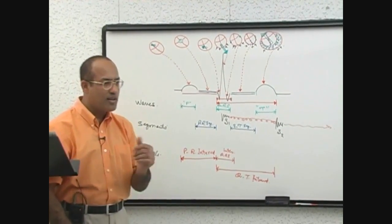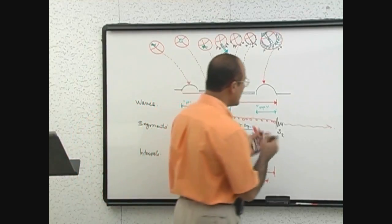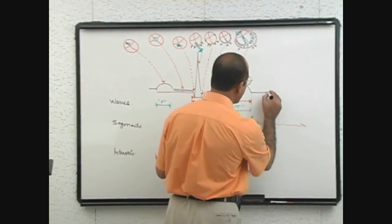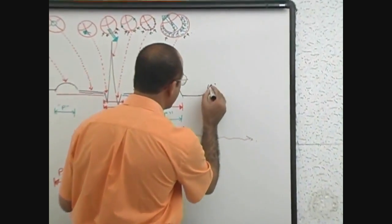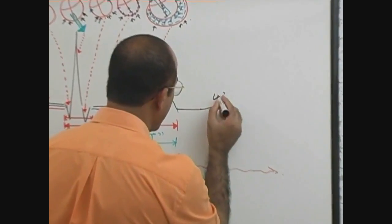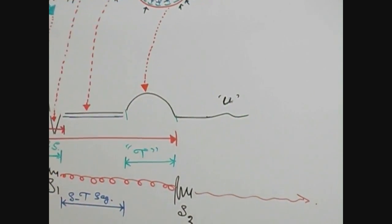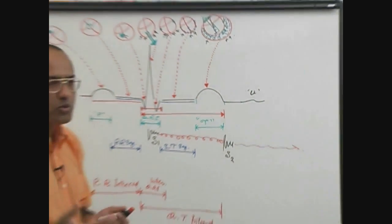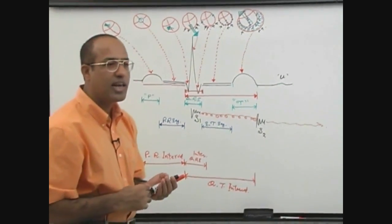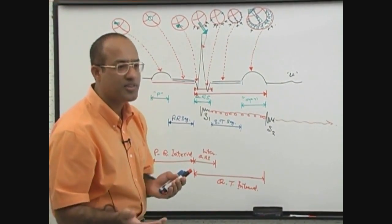Before taking a break, there is one more small wave to mention. Sometimes there is a wave after the T wave called the U wave. The U wave is due to electrical activity in the papillary muscle.